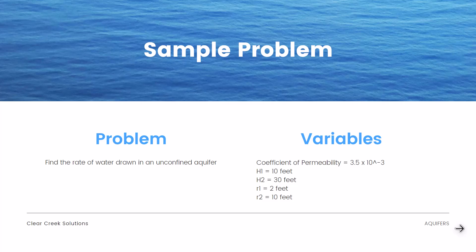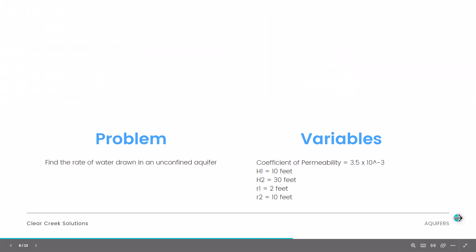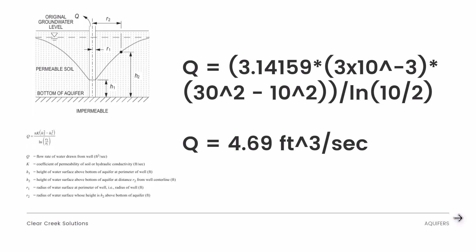Example: find the rate of water drawn from an unconfined aquifer with the given variables — coefficient of permeability k = 3.5 × 10⁻³ ft/s, h1 = 10 ft, h2 = 30 ft, r1 = 2 ft, r2 = 10 ft. Using the unconfined aquifer equation Q = πk(h2² - h1²) / ln(r2 / r1): Q = 3.14159 × (3 × 10⁻³) × (30² - 10²) / ln(10 / 2), giving Q = 4.69 cubic feet per second.